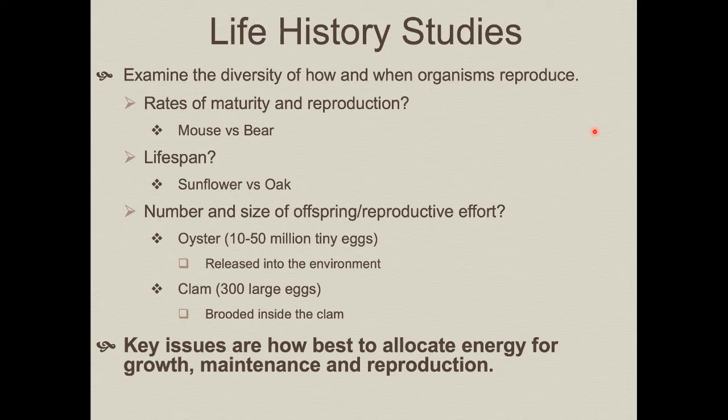The opposite strategy is to produce many fewer eggs but put more investment in each individual egg. A clam may produce only about 300 relatively large eggs, and instead of releasing them directly into the environment, it broods them inside where they then hatch — another example of ovoviviparity. This provides a degree of parental care and increases the chance that a higher fraction will survive to adulthood.